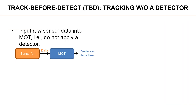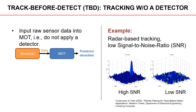Before looking at more tracking examples, we need to briefly mention tracking without a detector, something called Track Before Detect, or TBD for short. Instead of using a detector, the raw sensor data is fed directly into the MOT algorithm. One example where this approach is used is in radar-based tracking with very low signal-to-noise ratio, or SNR.